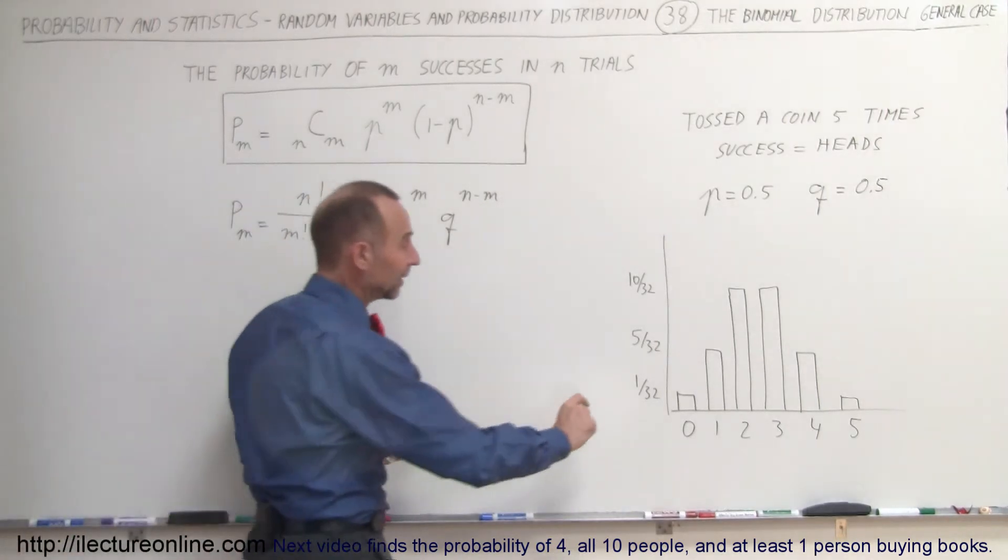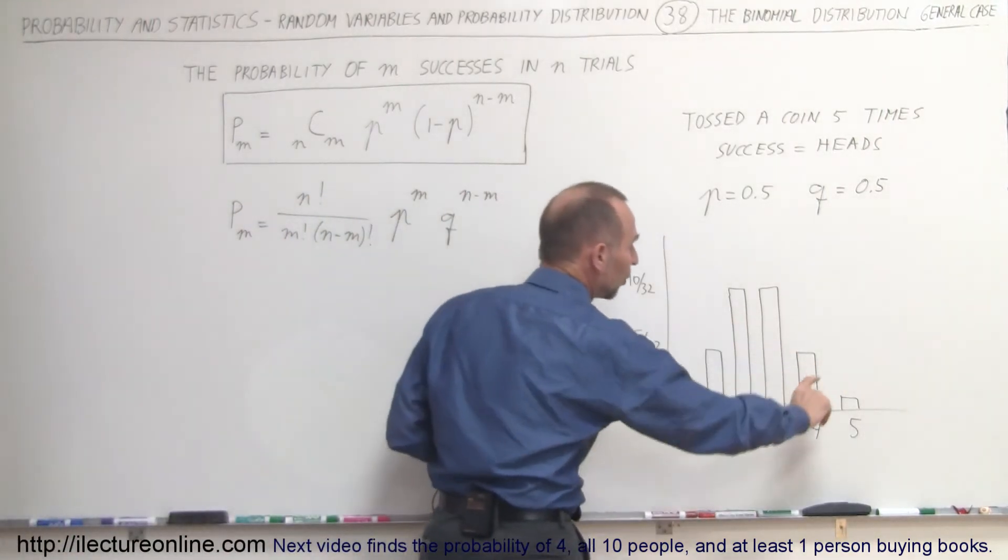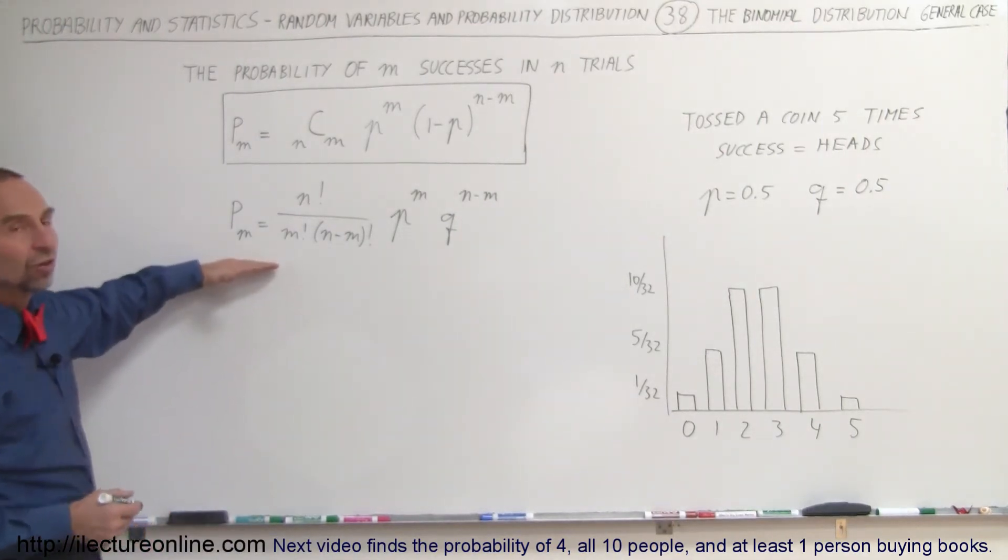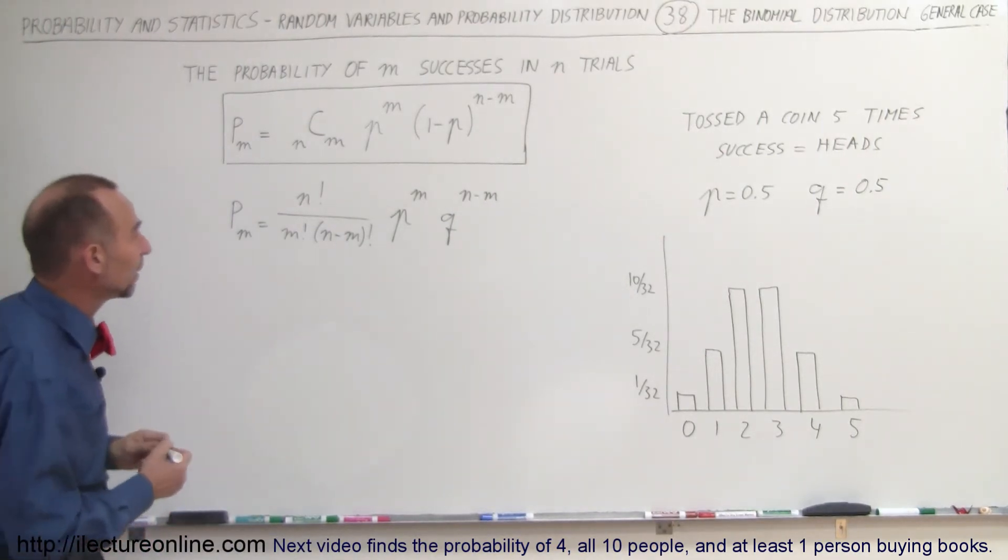Notice that if we add the areas up or the heights up of each one of those, that should add up to one. Now can we get the same result with this equation? The answer is yes, we should be able to.